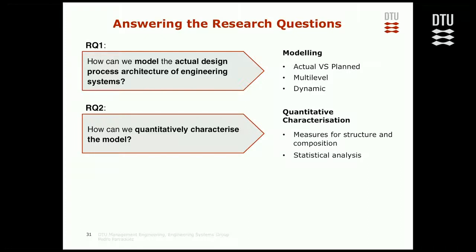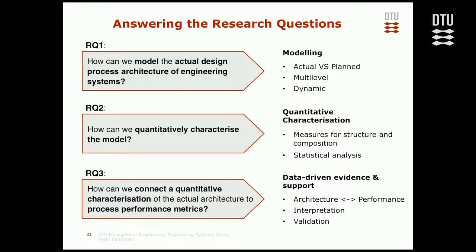In terms of research question two about quantitative characterization, we saw that we can use measures for structure and composition — in my case I used three, but it's easy to extend to many others. I provide some proposed statistical analysis that can facilitate the use both in industry and in research. For the final 'so what' question, can we provide data-driven evidence and support for the design process? I saw this link between architecture and performance — we are not only able to measure it, but we did discover this link to a certain degree, though it needs more replication. We can interpret more directly what is going on, not just through one standard network of tasks devoid of information about people participating in the process. Early validation in both case studies seems to reflect what is real in terms of the process, and it improved process reflection.